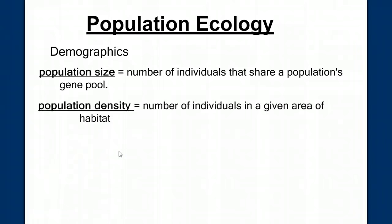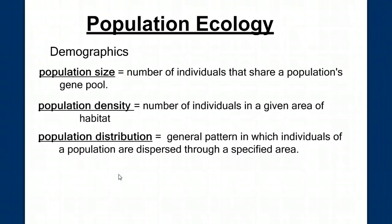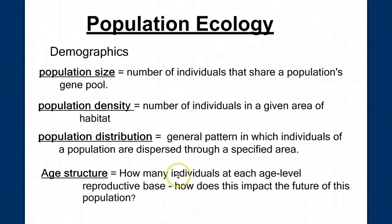Another component of demographics is population density, the number of individuals in a given area of habitat. We'll also look at population distribution. What's the pattern in which the individuals of a population are spread out through the specified area? And finally, we'll look at age structure. How many individuals at each age level in the reproductive base? And how does this impact the future of the population?